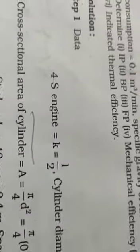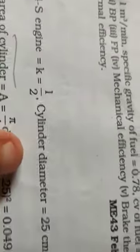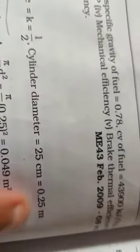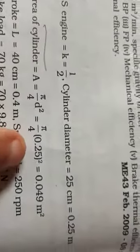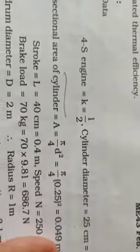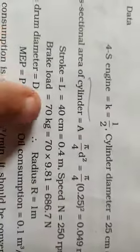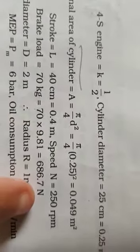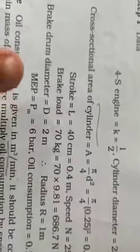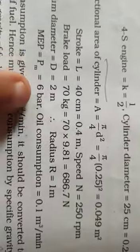So let us see. Being a four-stroke engine, k equals 1/2. Cylinder diameter is 0.25 meters, cross-sectional area pi by 4 d squared equals 0.049 meter square. Stroke 40 centimeters equals 0.4 meters. Speed 250 rpm. Brake load 70 kg, multiply with 9.81 to get Newtons: 686 Newtons.